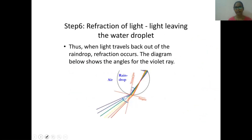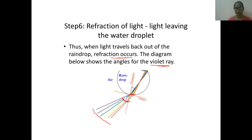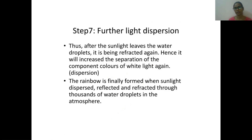Refraction of light leaving the water droplet: when light travels back out of the rain drop, refraction occurs again. The light spreads out again — this is what we call refraction. You can see the angles for violet light refracting again. Further light dispersion takes place — with respect to the normal, it spreads out and also disperses. Because of this spreading dispersion only, we are going to observe the rainbow.